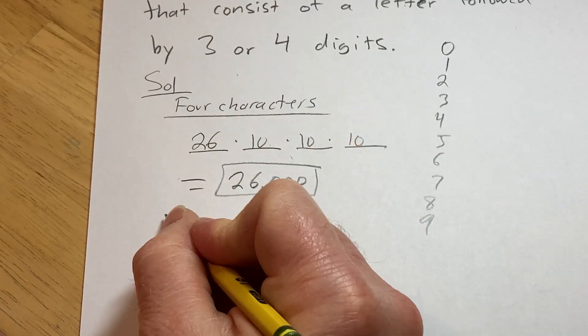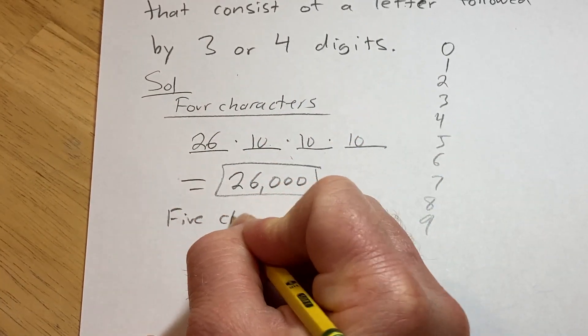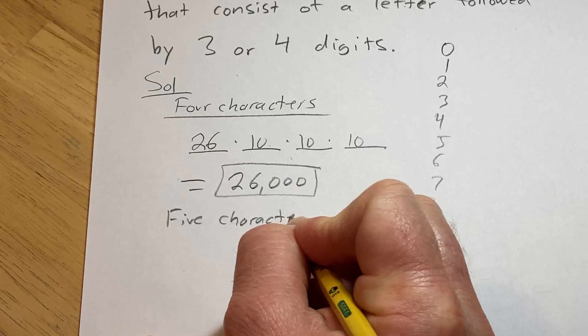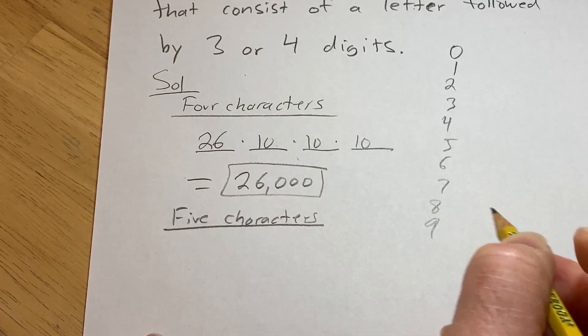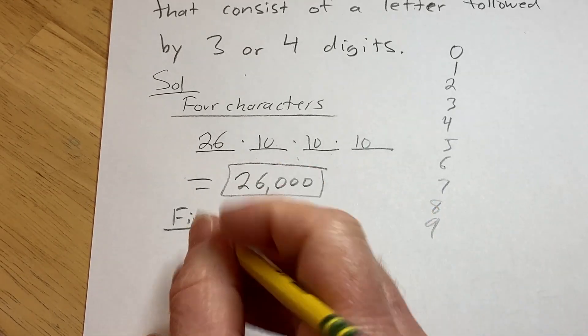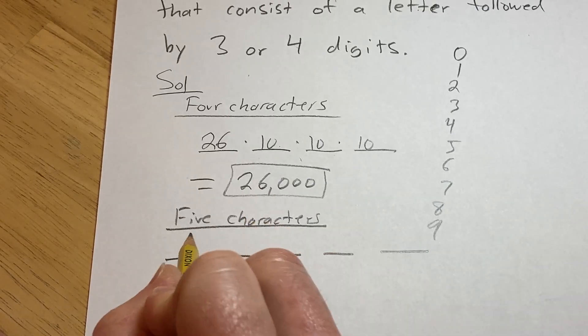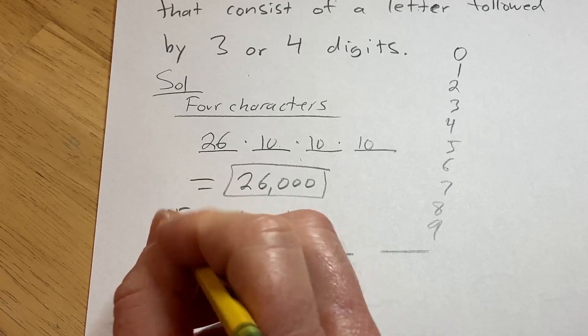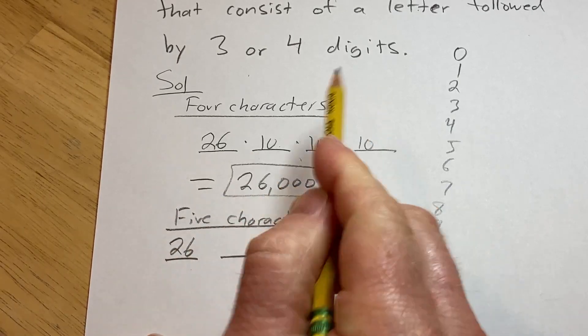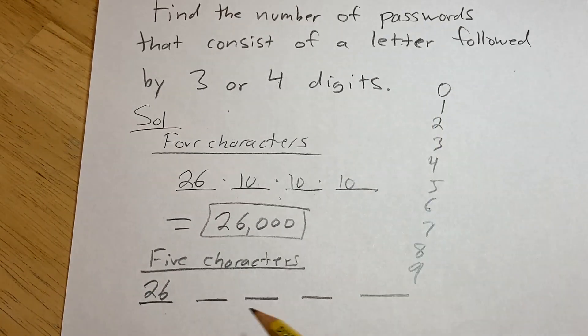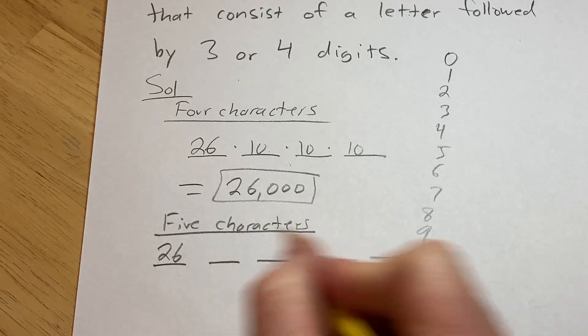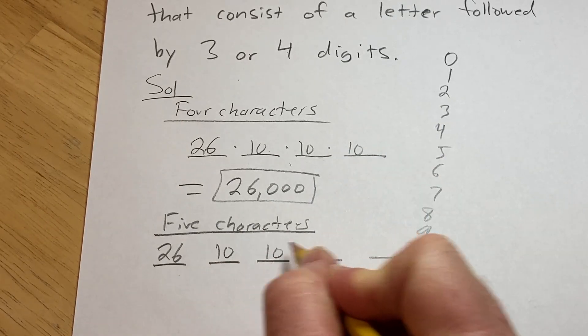So now let's do the five character passwords. For five characters, again, we have five positions. And there are 26 choices for the first character because we know it is a letter, and there are 26 letters in the English alphabet. And likewise, we have ten choices for each digit.